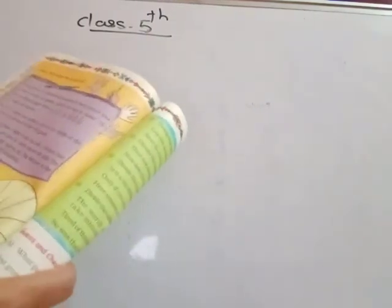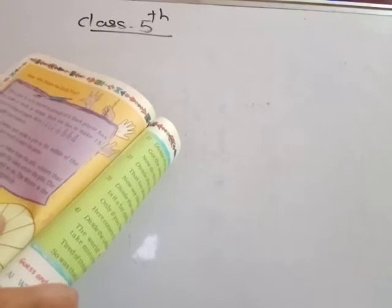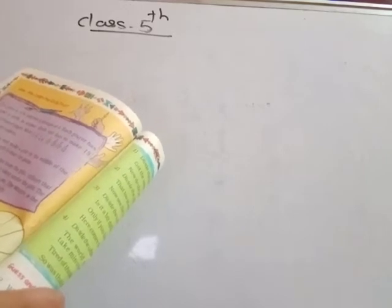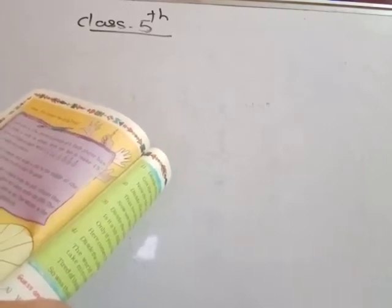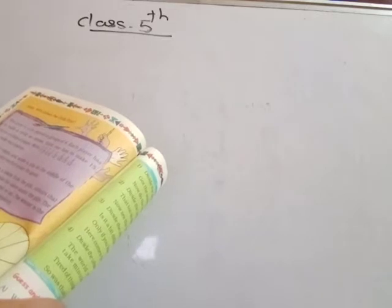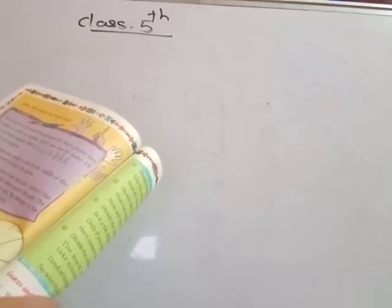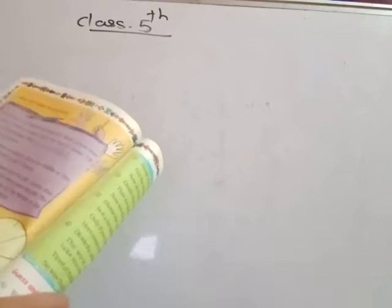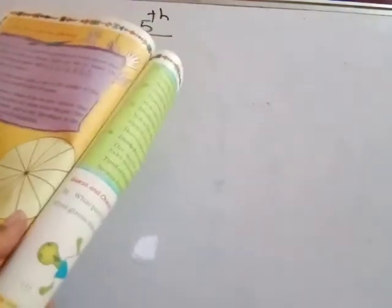The first player takes a token from the pile, colors that part of the picture, and puts the token under the pile. The next player does the same and so on. The winner is the one who first colors the circle completely. Do this activity at home and write the answers to these questions.